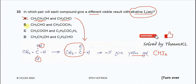For pair B: ethanal has the methyl ketone group, so it can form a yellow precipitate. This is propanone — propanone has two methyl ketone groups, so it can also form a yellow precipitate. This means in pair B, ethanal and propanone both will form a yellow precipitate. So B is not the answer.